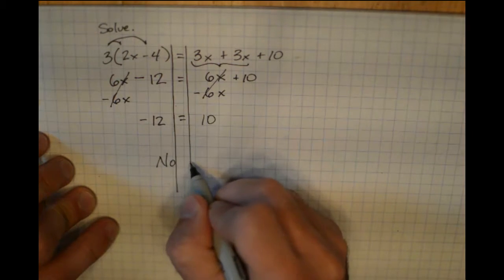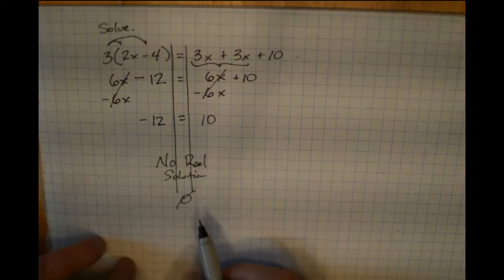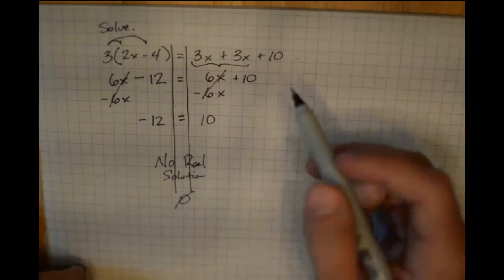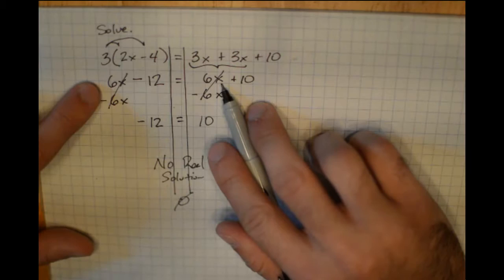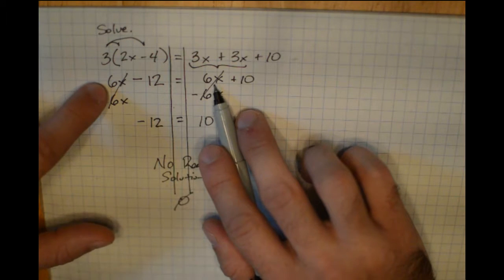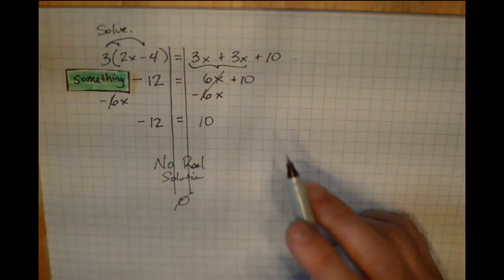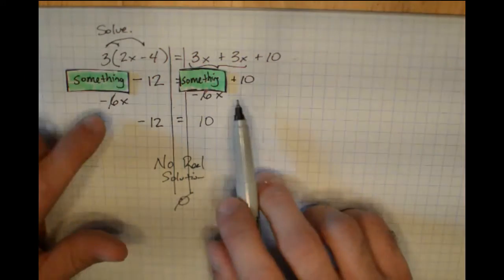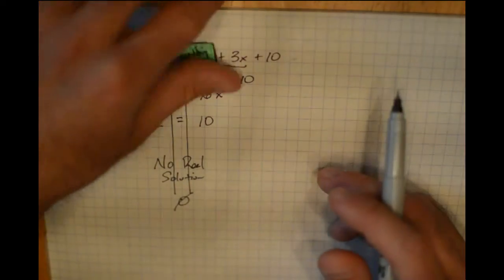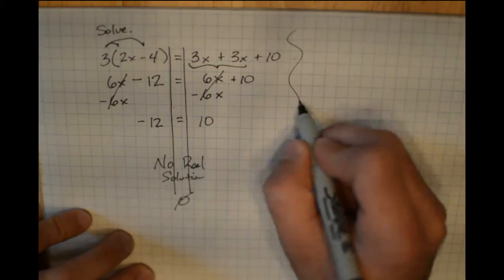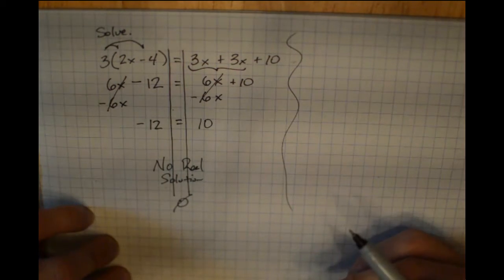What that indicates is there is no real solution. You can use the empty set symbol — a circle with a line through it — to state that there is nothing you can use for x. The reason is that whatever value you substitute in for x, you're taking something minus 12 versus something plus 10, and those will never be equal. So if you get a false statement when variables are eliminated, you have no solution.